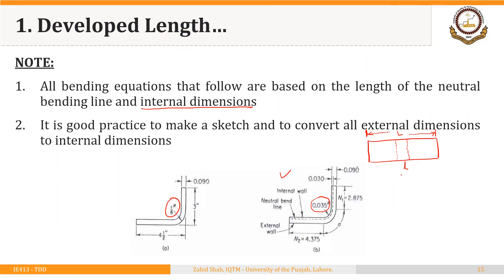That small portion is called bend allowance. We have to convert the radius and bend angle of the finished part drawing to this length l, which must be included in the starting blank length. This l will directly depend upon two factors: the bend radius and the bend angle. This length is equal to r times alpha, where alpha is in degrees and must be converted into radians.